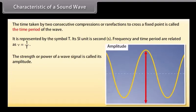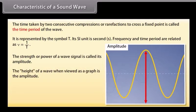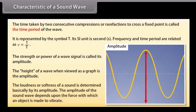The strength or power of a wave signal is called its amplitude, or the height of the wave when viewed as a graph is the amplitude. The loudness or softness of a sound is determined basically by its amplitude. The amplitude of the sound wave depends upon the force with which an object is made to vibrate.